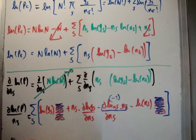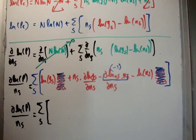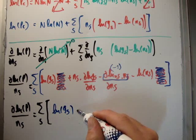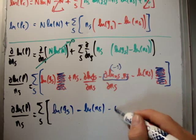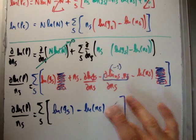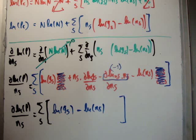What we're left with is del(log p)/del(n sub s) is equal to the sum over s of log g sub s minus log n sub s minus one. Now n sub s and g sub s are enormous numbers, so we can get rid of this one, and we're left with log g sub s minus log n sub s. That is the normal vector of the gradient of the logarithm of the probability.